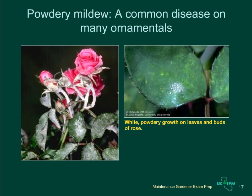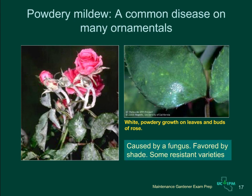One of the most common plant diseases seen in landscapes is powdery mildew. Powdery mildew occurs on many plants, especially roses, crepe myrtle, sycamore, and euonymus, and can be caused by several species of fungi. The disease is distinguished by white, powdery growth on leaves and shoots. On rose, powdery mildew is favored by shade, and rose plants grown in the sun are less likely to get the disease. For most of these plants, you could purchase less susceptible varieties that are less likely to show symptoms.